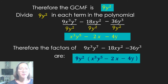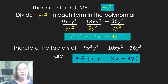Now divide 9y² into each term of the polynomial: 9x³y⁷ divided by 9y² gives x³y⁵, minus 18xy² divided by 9y² gives 2x, minus 36y³ divided by 9y² gives 4y. Therefore, the factors of the given polynomial are 9y² times (x³y⁵ minus 2x minus 4y).